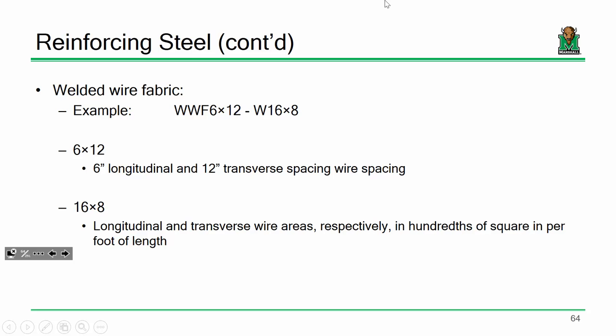We're not going to use welded wire fabric very much. It's primarily used in slab reinforcement or sometimes shear reinforcement. The designation — for example, 6×12 W16×W8 — indicates 6-inch longitudinal spacing, 12-inch transverse spacing, with longitudinal and transverse wire areas of 0.16 and 0.08 square inches per foot of length respectively. Just wanted to expose you to it.